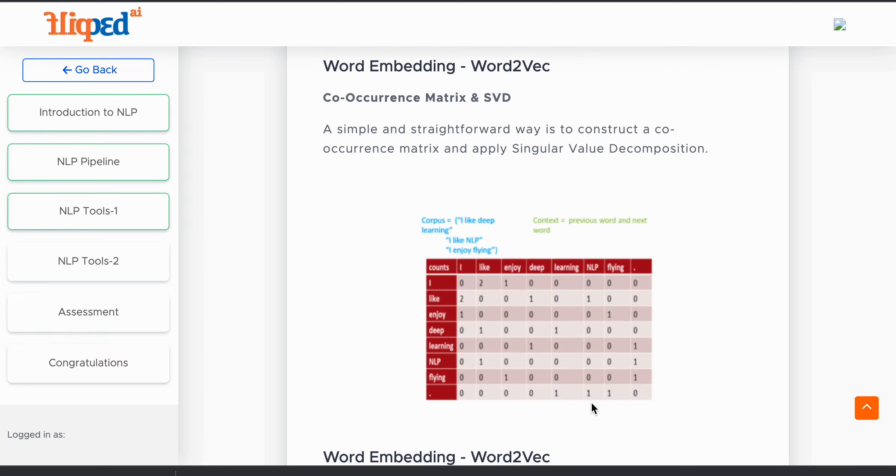A simple way to get these kind of representations is to construct a co-occurrence matrix and apply singular value decomposition. In the co-occurrence matrix, we assume the context of the previous word and next word, and then we calculate the occurrence of word to word and calculate number of occurrences with respect to each word to another word in the vocabulary.